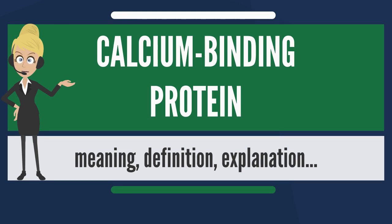Calretinin is another type of calcium binding protein weighing 29 kDa. It is involved in cell signaling and shown to exist in neurons. This type of protein is also found in large quantities in malignant mesothelial cells, which can be easily differentiated from carcinomas. This differentiation is later applied for a diagnosis on ovarian stromal tumors.